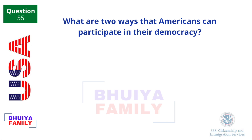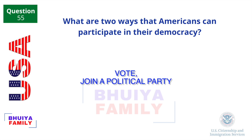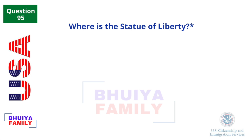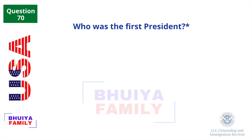What are two ways that Americans can participate in their democracy? Vote. Join a political party. Where is the Statue of Liberty? New York Harbor. Who was the first President? George Washington.